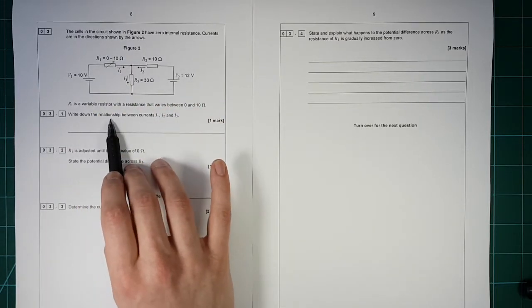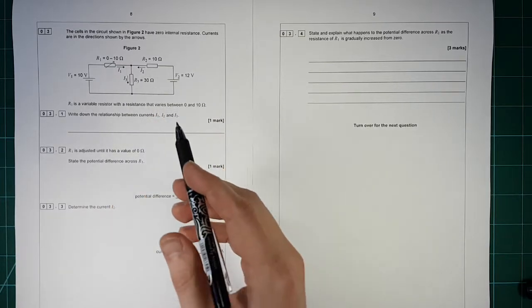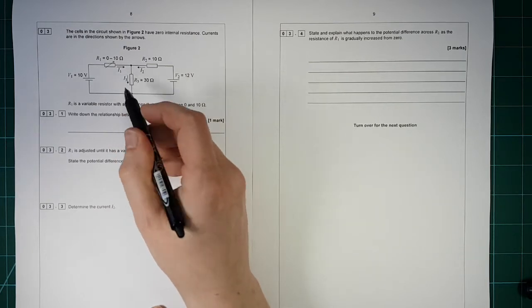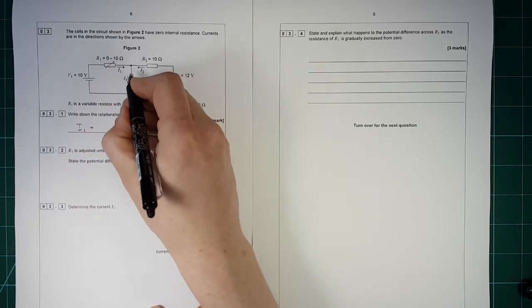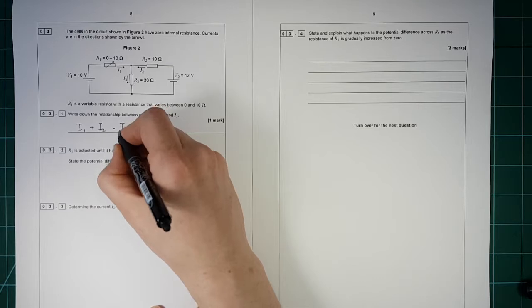Calculate, write down the relationship between I1, I2, and I3. So this is Kirchhoff's first law. All the current entering a point has to leave it. So I1 is going in, plus I2 is going in. It must equal all the current leaving, which is I3.